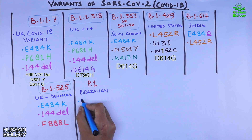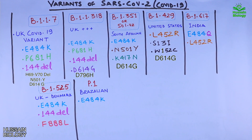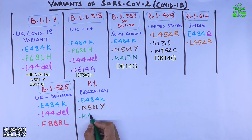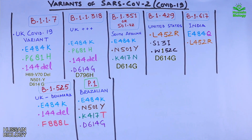The P.1 Brazilian variant has mutations including E484K, N501Y, K417T, and D614G. These are the important variants of concern with their key mutations that positively affect transmission and help in evading the immune system.